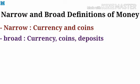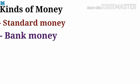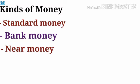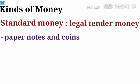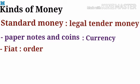Under the same topic, let's look into the kinds of money, which are divided into three: standard money, bank money, and near money. Standard money is also called legal tender money as no one can refuse to accept it. It is divided into two types — paper notes and coins — which together are called currencies, and these currencies are also called fiat money as they act under the order of the government. Here, fiat means order.